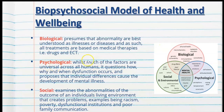Looking at the psychological factors, while much of the factors are universal across all humans, it questions how, why and when dysfunction occurs and proposes that individual differences cause the development of mental illnesses. The golden rule of psychology is that no two people are the same, so we must look at individual differences and experiences to figure out what psychological factors have contributed to or developed in terms of the onset of a mental health disorder. We look at things such as response to reward and emotions, self-esteem, attitudes and beliefs, coping skills, perceptions, temperament, social skills, interpersonal relationships, trauma and grief.